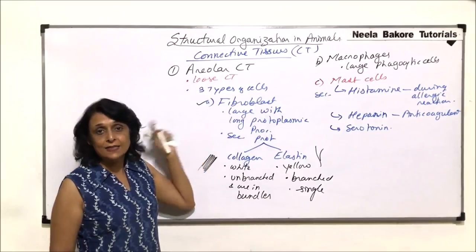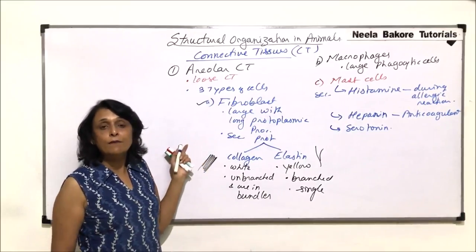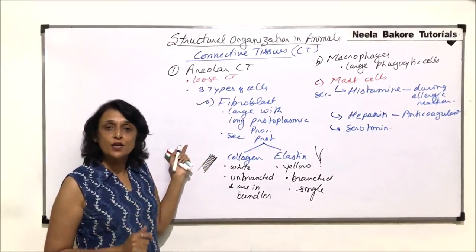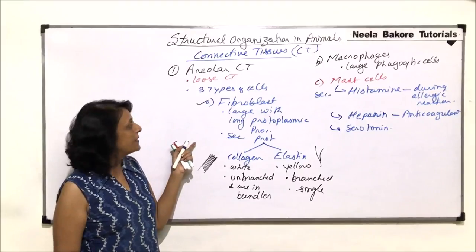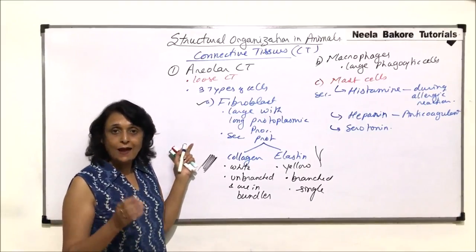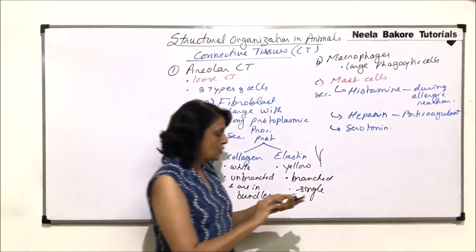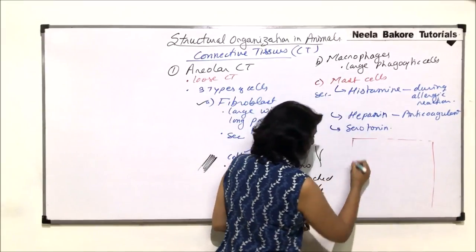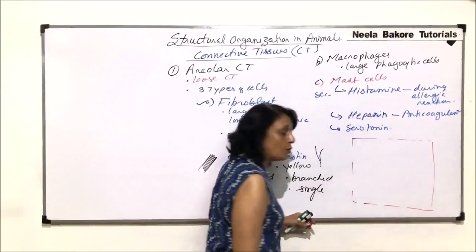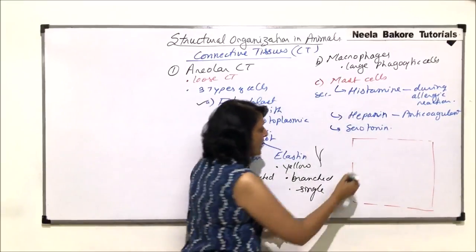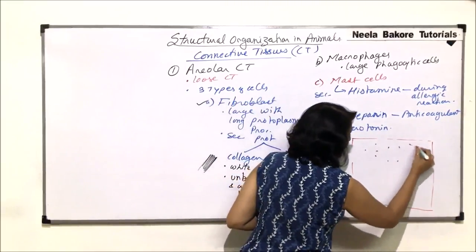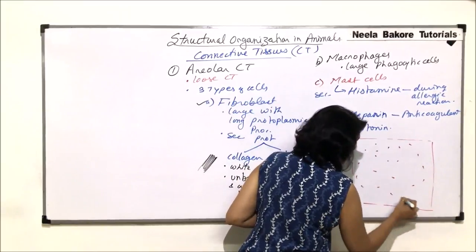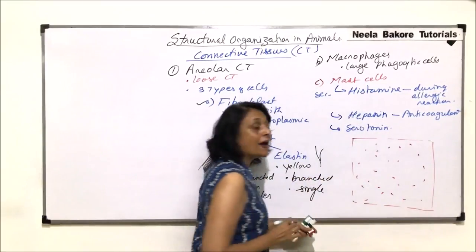Now we said when we were talking about the brief classification of connective tissue, that connective tissues, they have cells and the ground tissue. So if we draw the connective tissue, that is the areolar connective tissue, we would show there is this ground tissue.